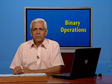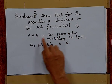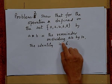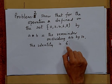Let us take one more example. Show that for the operation star defined on the set {0, 2, 4, 6, 8} by A star B equal to the remainder on dividing AB by 10, the identity is 6. This problem is very interesting — usually the identity is 0 or 1, but here the identity is neither 0 nor 1.